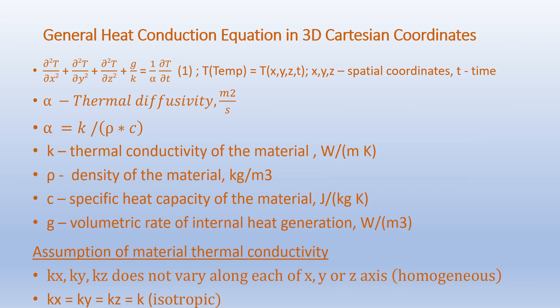The general heat conduction equation in 3D Cartesian coordinates is given as: ∂²T/∂x² + ∂²T/∂y² + ∂²T/∂z² + G/K = (1/α)(∂T/∂t). Here, the uppercase T represents the temperature and is a function of the three spatial coordinates x, y, z and time t.